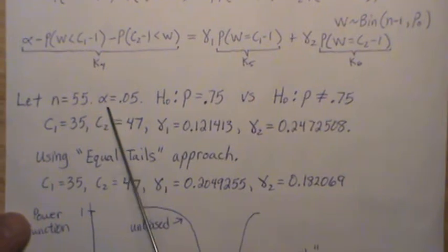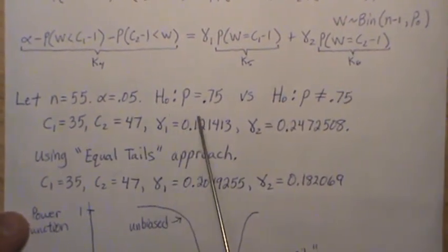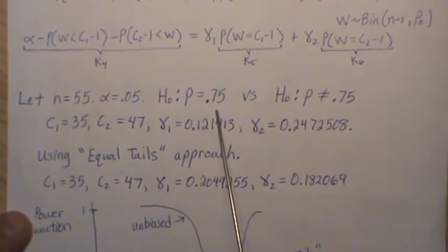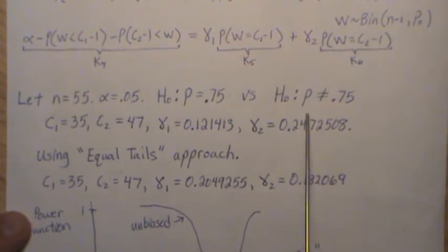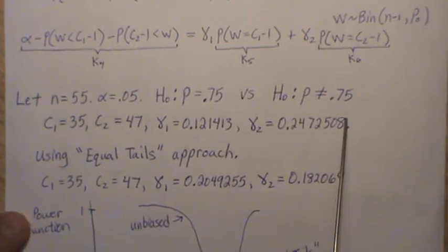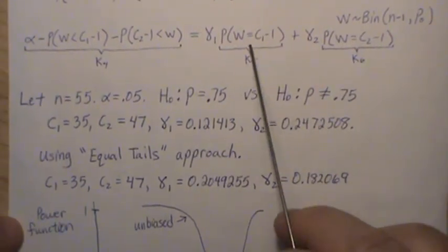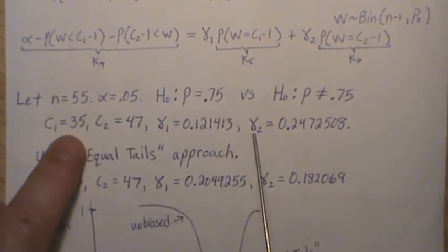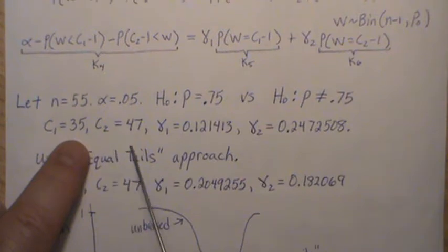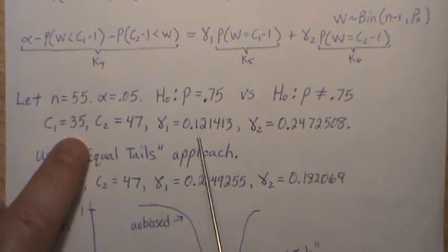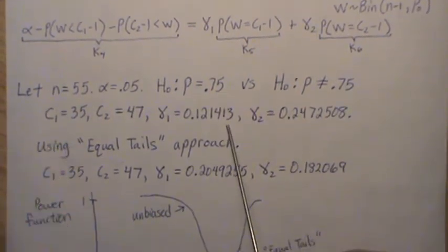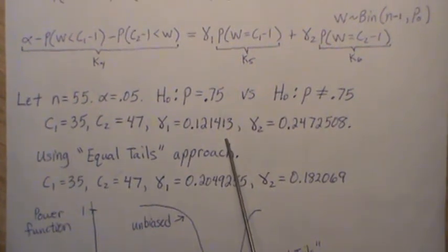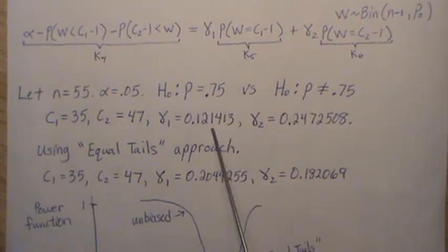Now, a specific example: when N equals 55, alpha is 0.05, and we want to test is P equal to 0.75 versus P is not equal to 0.75. Using these equations, and of course I used R to help, I came up with these values. C1 is 35, C2 is 47, and these are the gamma one and gamma twos. And this is it. This is the uniformly most powerful unbiased hypothesis test for this binomial setting or Bernoulli setting.